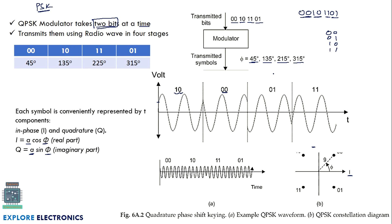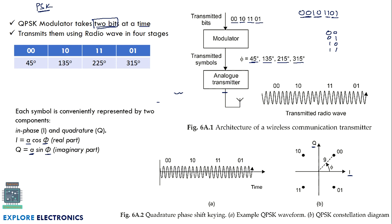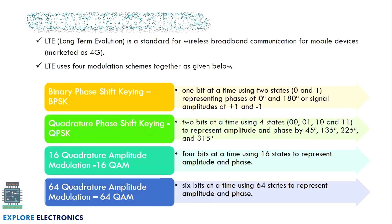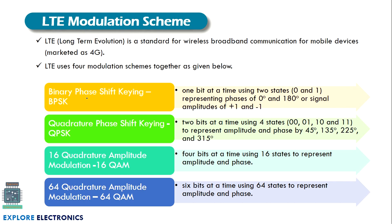This is how QPSK modulates signals in an analog transmitter. The transmitted radio wave corresponds to the two-bit input values. Regarding LTE modulation schemes — LTE, Long Term Evolution, is the standard for 4G mobile device communication. LTE uses four schemes: Binary Phase Shift Keying (BPSK), Quadrature Phase Shift Keying (QPSK), 16 Quadrature Amplitude Modulation (16-QAM), and 64 Quadrature Amplitude Modulation (64-QAM).